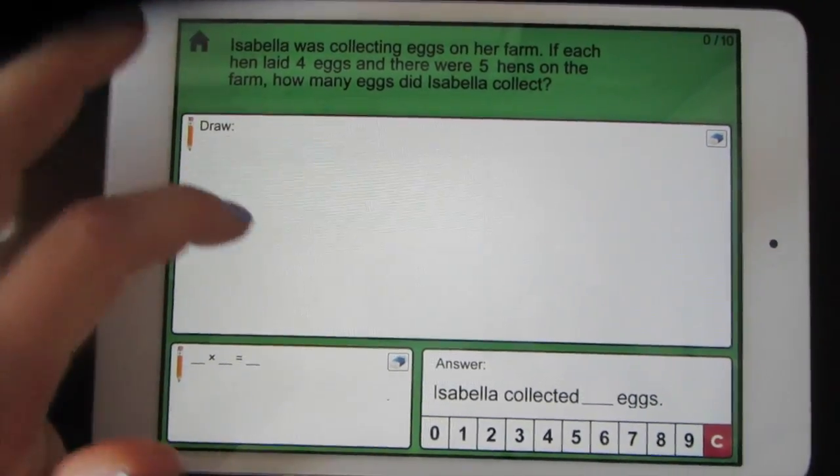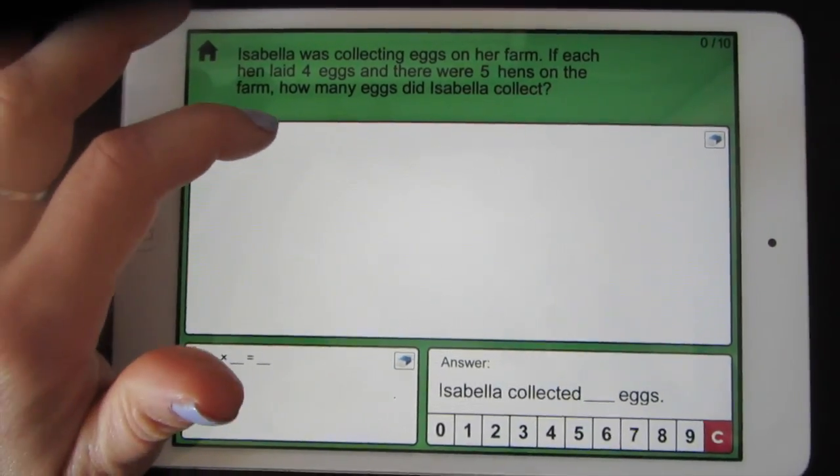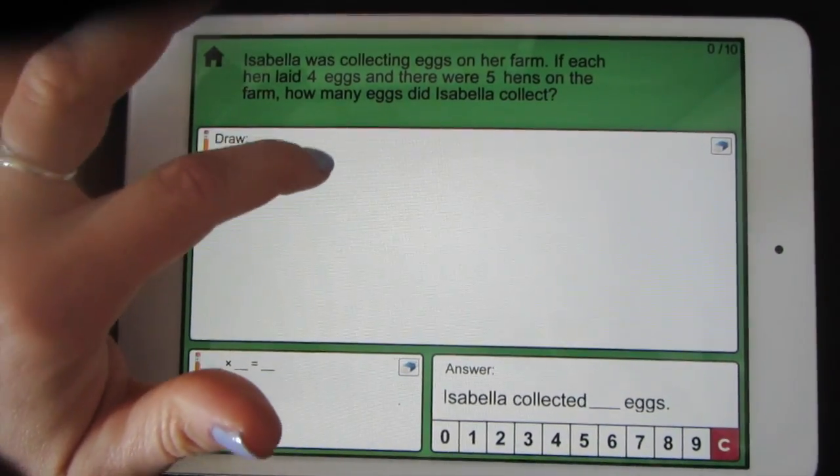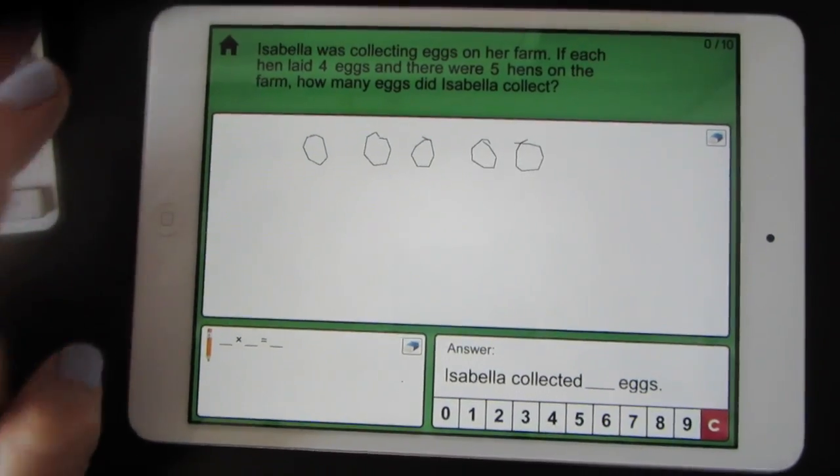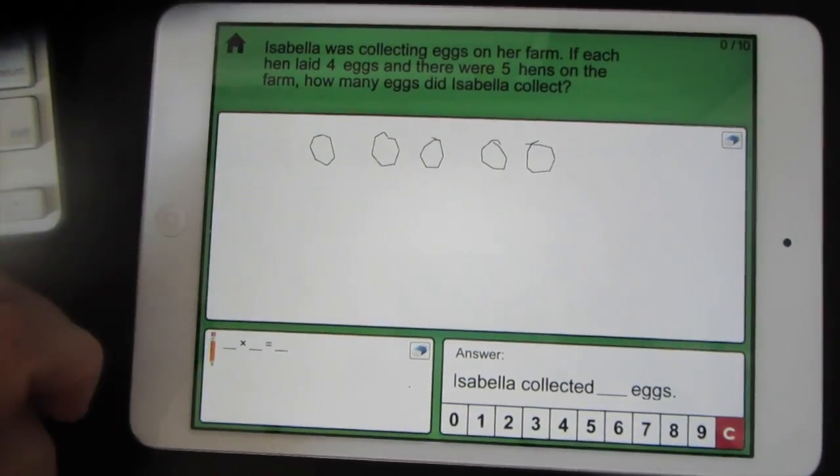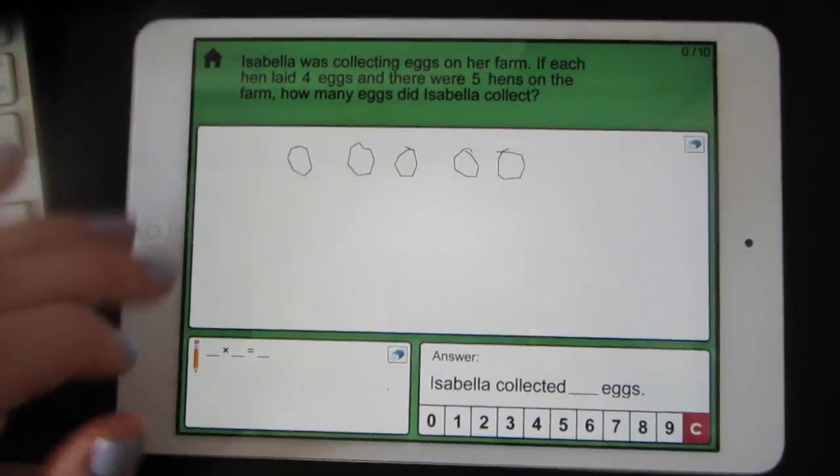Draw a picture in the box. I'll draw circles to represent her five hens. Then each hen laid four eggs, so I'll just draw little lines to represent the eggs.